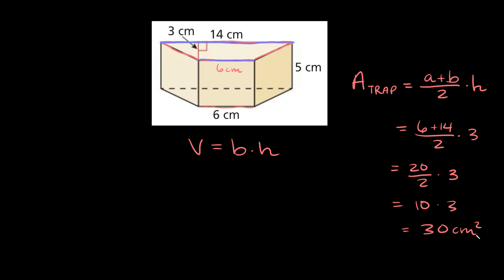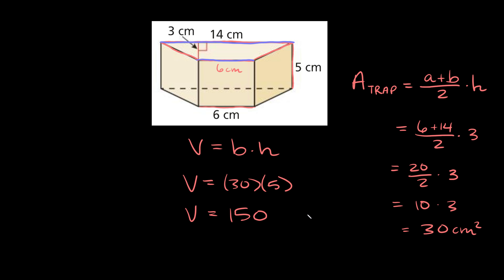So this is the area of the face, or in other words the base. So then here we can say that the volume is going to be equal to 30 times the height, which is the last dimension we haven't used — it's this one right here, which is 5. So the volume is going to be equal to 30 times 5, which is 150, and we're going to get centimeters cubed.